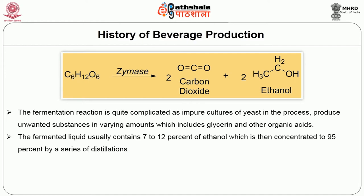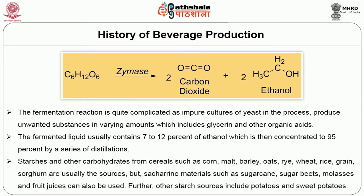The fermented liquid usually contains 7–12% ethanol, which is then concentrated to 95% by a series of distillations. Starches and other carbohydrates from cereals such as corn, malt, barley, oats, rye, wheat, rice, grain, and sorghum are usually the sources. Saccharine materials such as sugarcane, sugar beets, molasses and fruit juices can also be used, and other starch sources include potatoes and sweet potatoes.